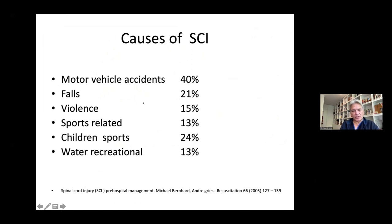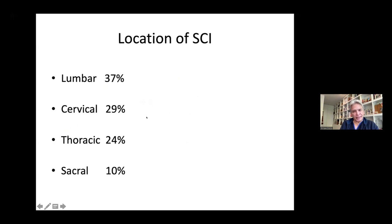The causes of SCI are motor vehicle accidents in 40% of cases, falls in 21%, violence 15%, sports-related 16%, children's sports 24%, and water recreational activities in 15% of cases. The location of spinal cord injuries are most commonly in the lumbar spine at 37%, cervical at 29%, thoracic 24%, and sacral 10%.